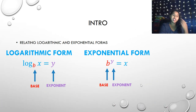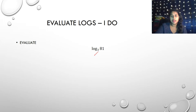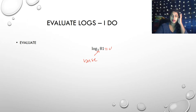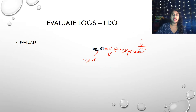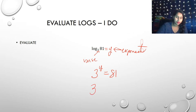Let's work on some example problems. For the first one, this is my base right here, and it's equal to some variable y, which is my exponent. I can rewrite that using the exponential inverse: 3 to the y equals 81. What power solves this? 3 to the 4th equals 81. Therefore, y equals 4, and that is our answer.